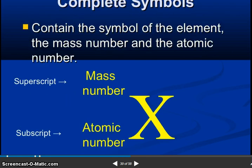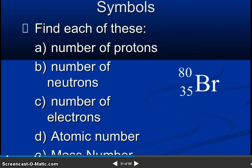So complete symbol contains the symbol of the element, the mass number, and the atomic number. Superscript is the mass number. Subscript is the atomic number.